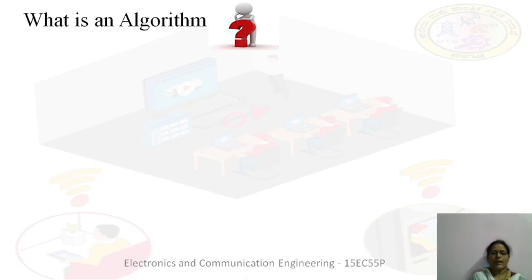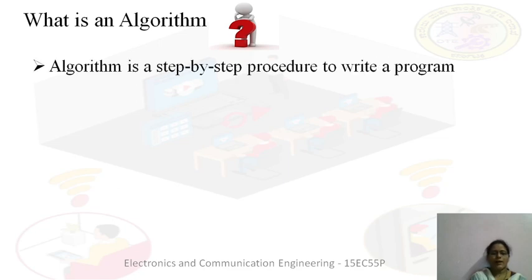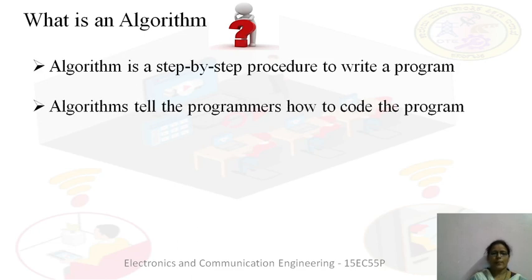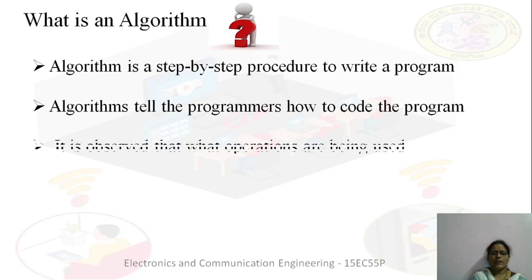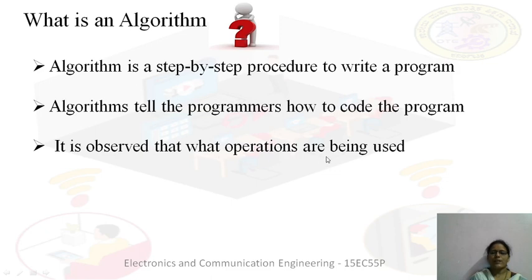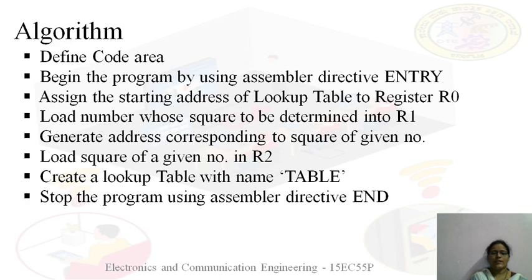Students, before writing the algorithm, let us first see what an algorithm actually is. An algorithm is nothing but a step-by-step procedure to write a program. This algorithm tells the programmers how to code the programs — that means, what instructions we can use to write a program. It is observed what operations are being used, and once we write these steps, we come to know what operations are used in the program. So, next, we will write the algorithm.